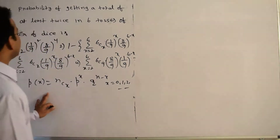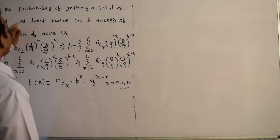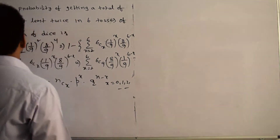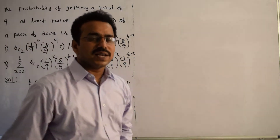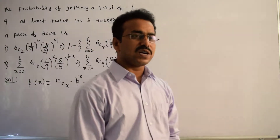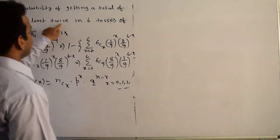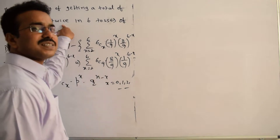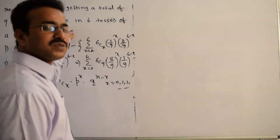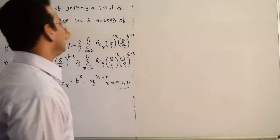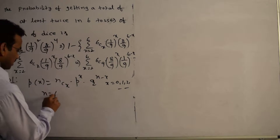Here, we need to find what p and n are. The probability of getting a total of 9 when 2 dice are thrown gives us p. 'At least twice' means x must be 2 or more, i.e., P(X ≥ 2). In 6 tosses, clearly n = 6.